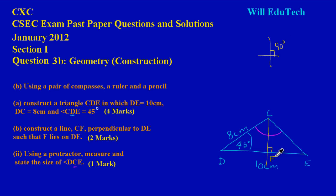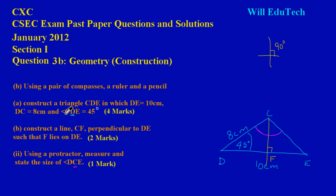Let me explain the sketch. The first thing you want to construct is your line segment DE — that's 10 centimeters. Draw a line DE and label it 10 cm. After drawing with your ruler, measure 10 centimeters and label that line segment DE. Now they gave us another piece of information: DC equals 8 centimeters. Before I can draw DC, I have to take into account that angle CDE equals 45 degrees.